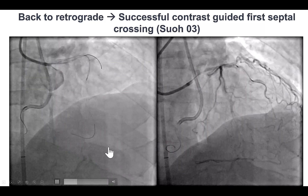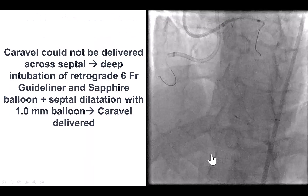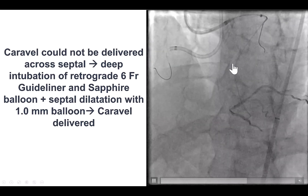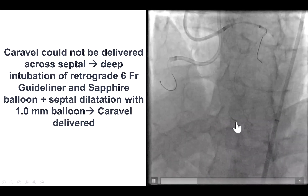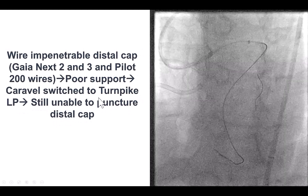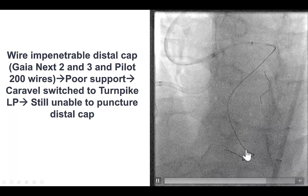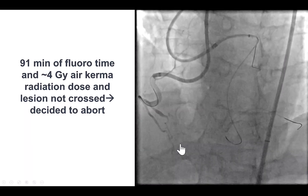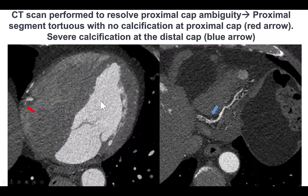We switched back to the retrograde approach and were able once again to cross using an SO3 guide wire, but then had difficulty delivering the microcatheter. We used a six French guide extension and dilated the septal with a 1.0 mm balloon. Eventually, we were able to deliver a Caravel microcatheter all the way down to the right posterior descending artery to the distal cap, but this cap was very challenging to penetrate. Despite using a Gaia Next 2, Gaia Next 3, Pilot 200, and a Turnpike LP, we were unable to puncture it. We lost access to the septal, and because of long fluoroscopy time and radiation dose, we decided to stop and bring the patient back for a second attempt.